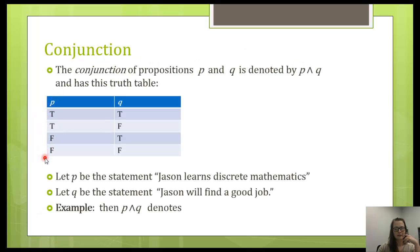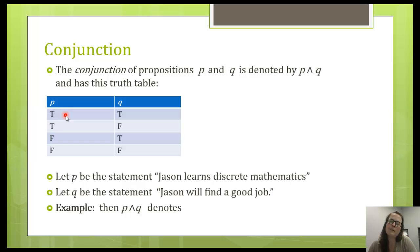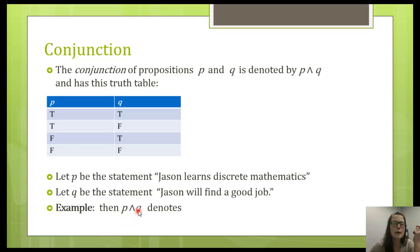Here are those truth value combinations. This is our first operation that involves two propositions: conjunction, or AND, denoted by this little caret symbol. I think 'and' makes sense in the English language. If both of these are true and we join them by AND, is the whole statement P∧Q true or false? What if it's true that Jason learns discrete mathematics, but he doesn't find a good job — overall, is this statement true or false?